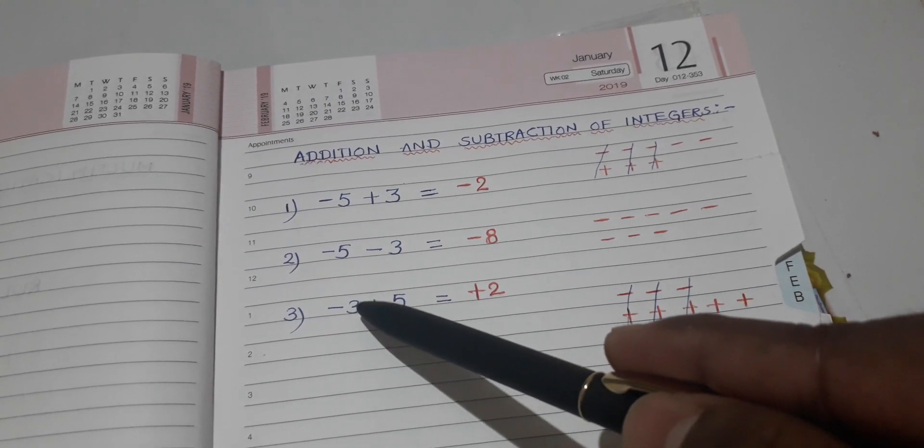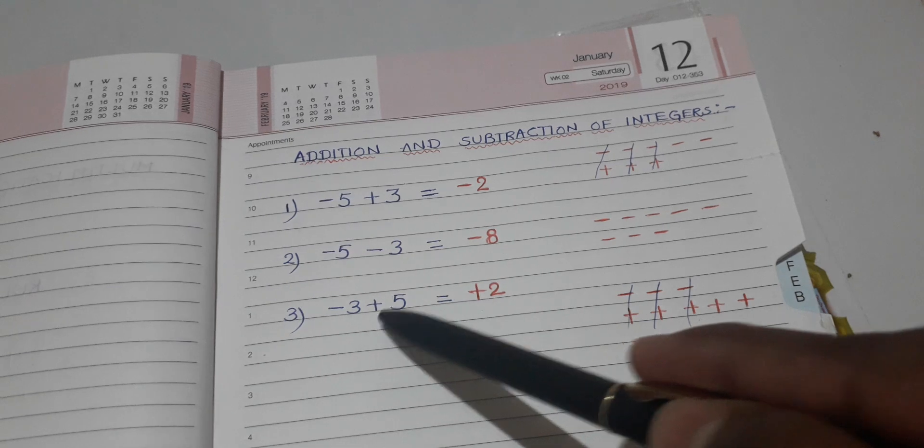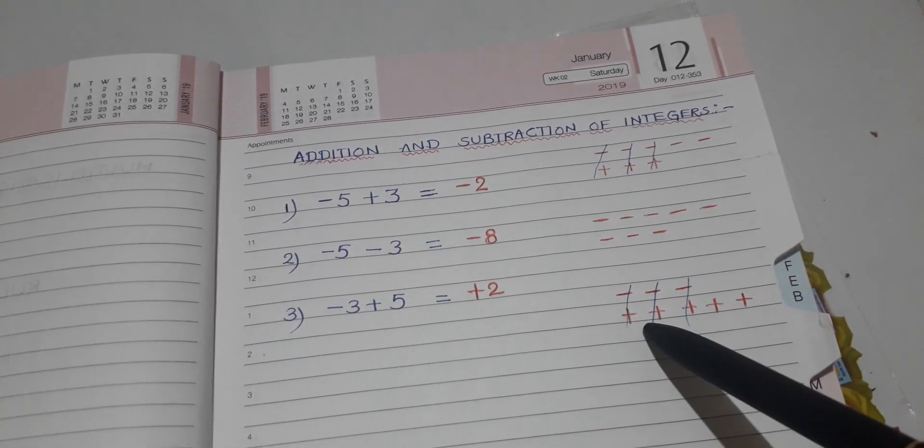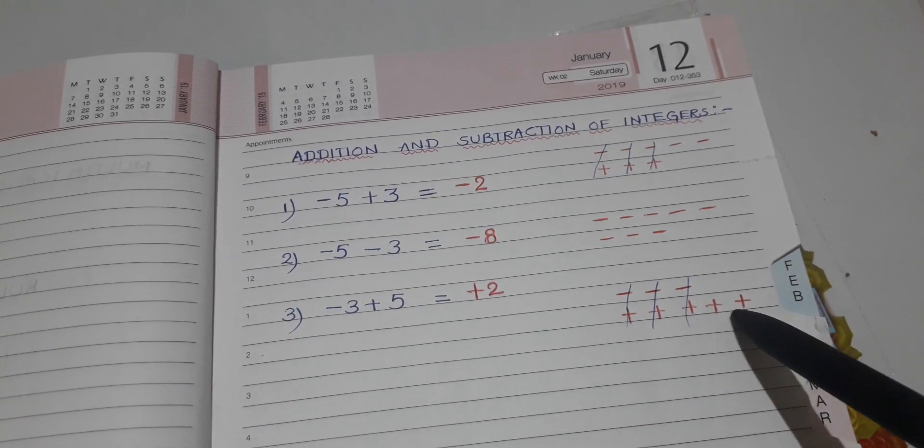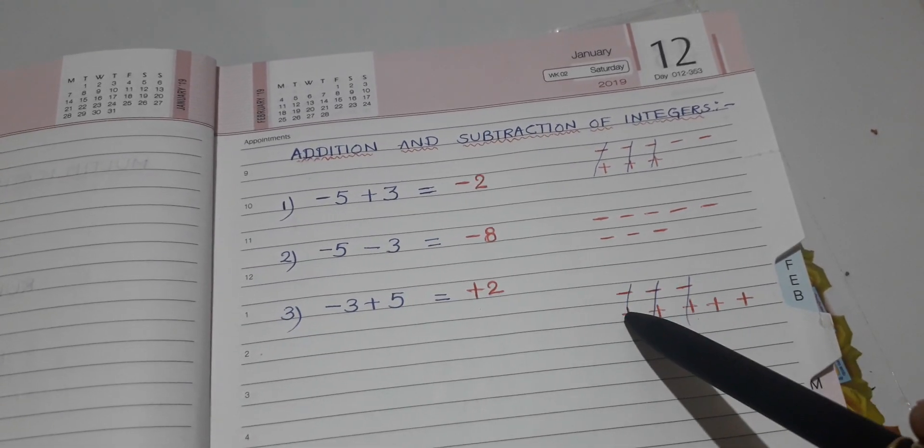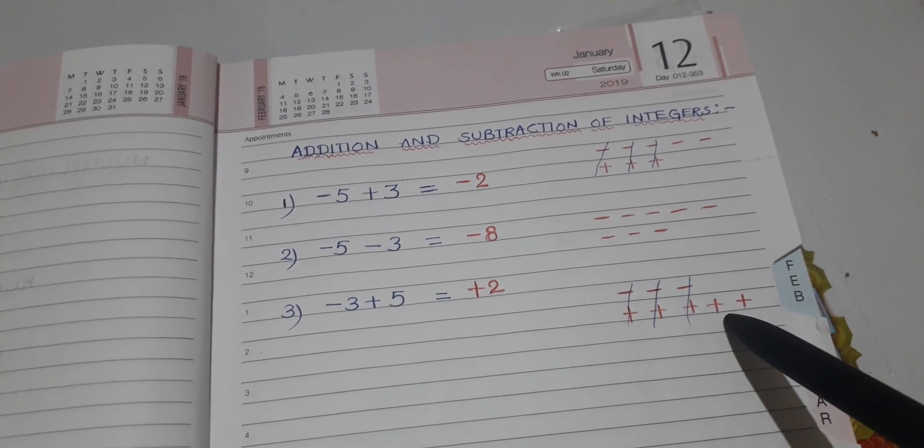Coming to the third question, minus 3 plus 5 equals what? Minus 3 means 3 minus symbols you write. Plus 5 means you write below the minus symbols, you write plus 5 symbols. Plus symbols 5. Then minus plus, minus plus and this minus plus gets cancelled. Then 2 plus symbols are left.